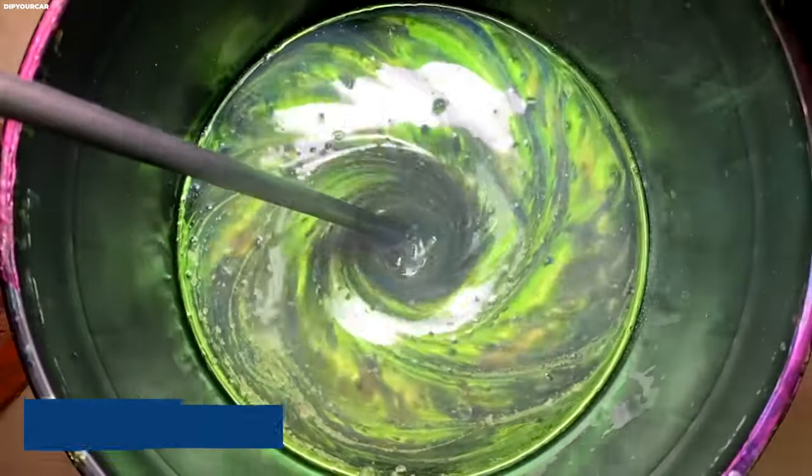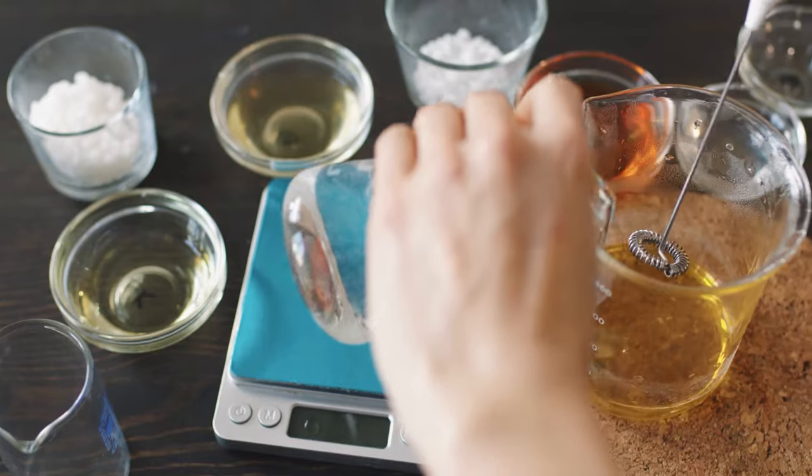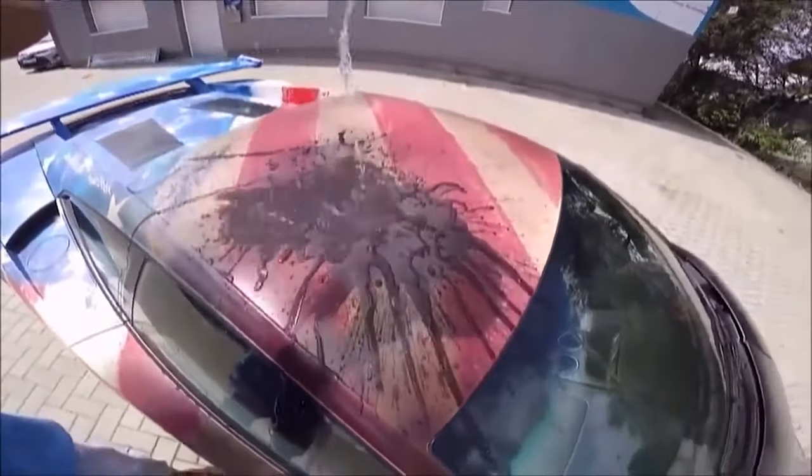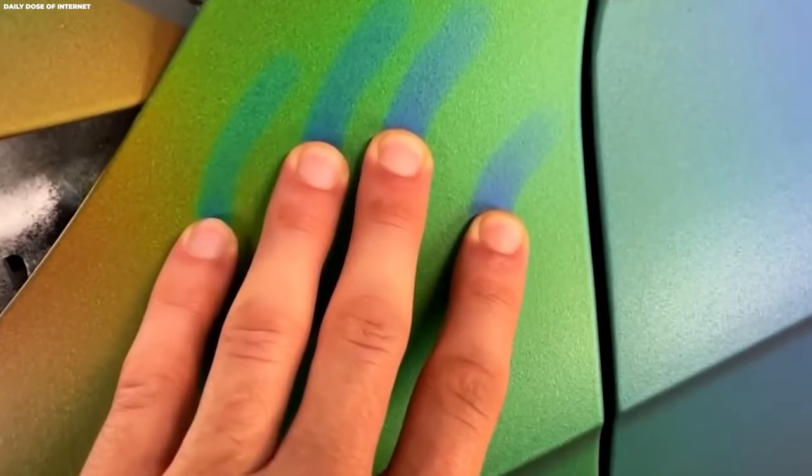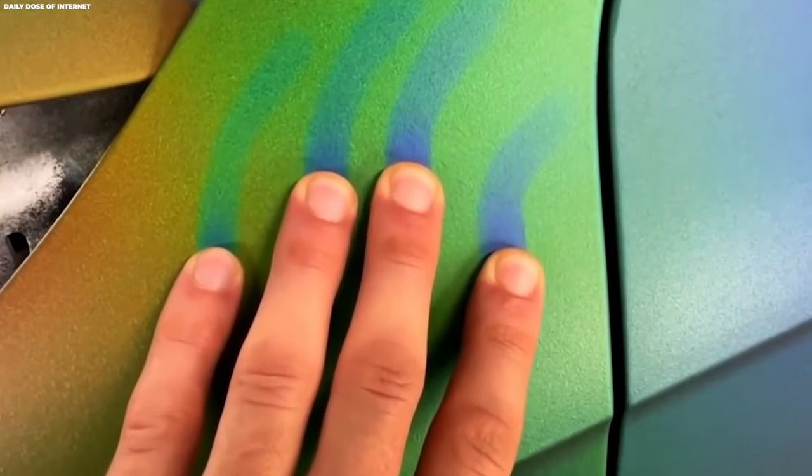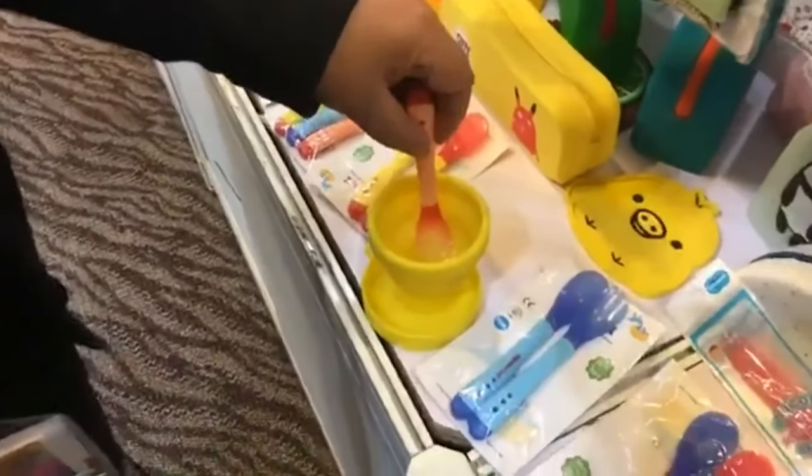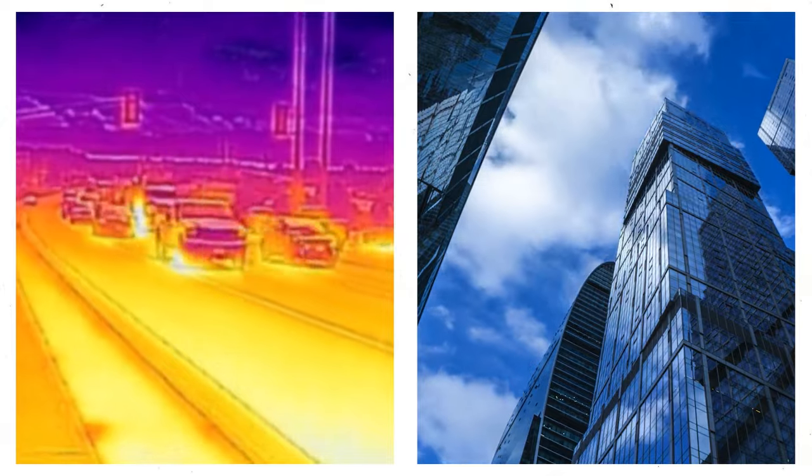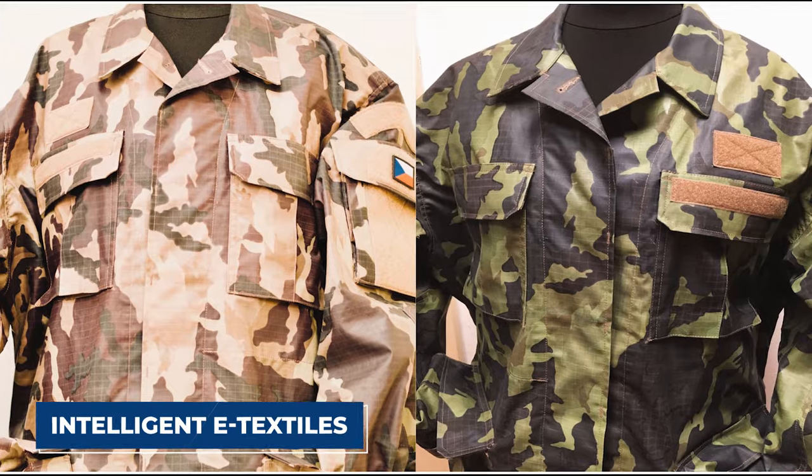The color-changing pigments in thermochromic paints work via several mechanisms. Some contain liquid crystals that untwist to reflect different colors when heated past specific transition temperatures. Others rely on pigments embedded in wax-like matrices that melt to reveal different underlying hues at certain heat levels. Thermochromic paints can be tuned to shift between specific color combinations in response to defined thermal shifts.